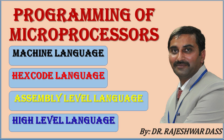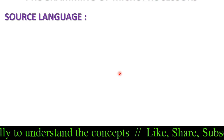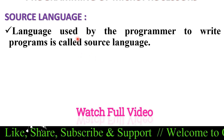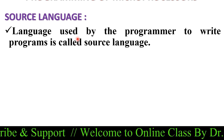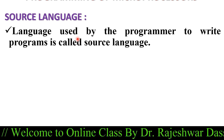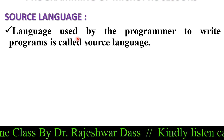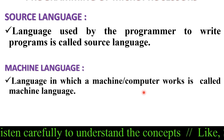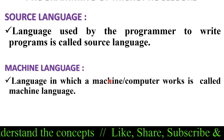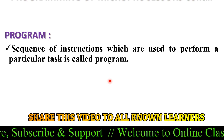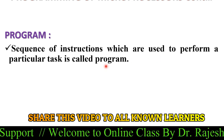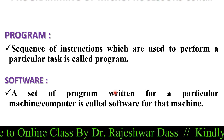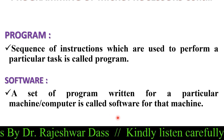Before starting this class we should have knowledge of some basic terms. The source language is defined as the language used by the programmer to write programs. Machine language is basically the language in which a machine or computer works, and the code used for writing in machine language is known as machine code. A sequence of instructions used to perform a particular task is called a program. A set of programs written for a particular machine is called software.